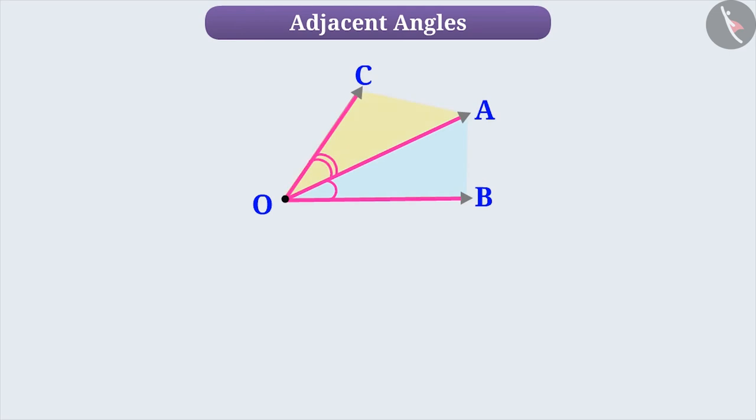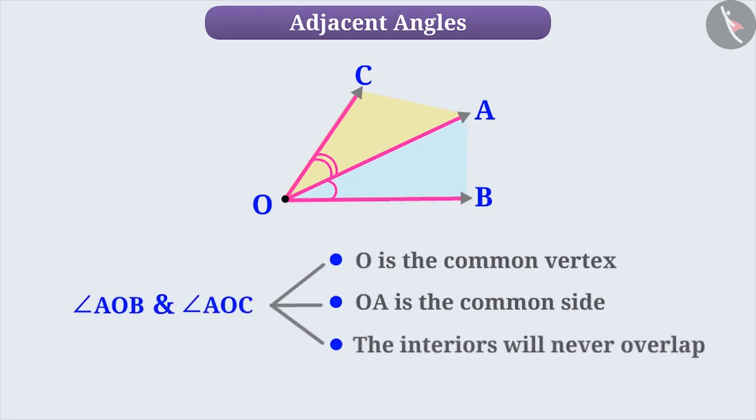For example, here, the vertex O is the common vertex of both the angles. Similarly, Ray OA is the common arm of both these angles. The non-common sides are on either side of the common side.